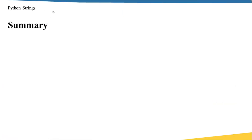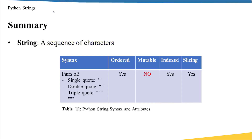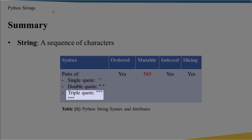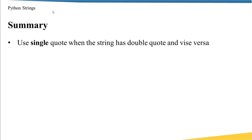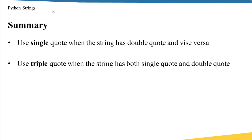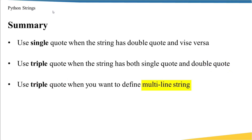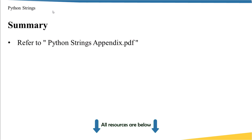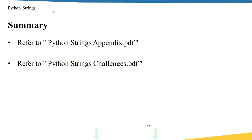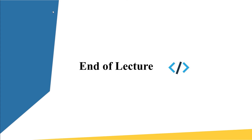Let's summarize what we learned. A string is a sequence of characters enclosed in single, double, or triple quotes. It is ordered, not mutable, indexed, and supports slicing. Use single quotes when the string contains double quotes and vice versa; use triple quotes when the string contains both, or spans multiple lines. Special characters include backslash-n for a new line and backslash-t for a tab space. Please refer to the Python string appendix and challenges to practice. Thank you and join me in the next lecture.